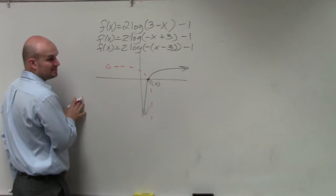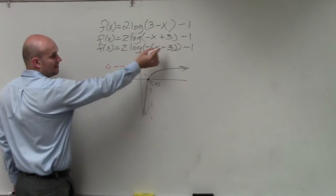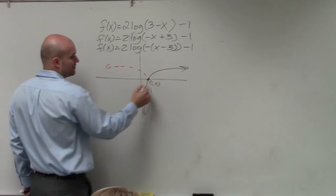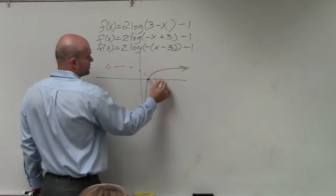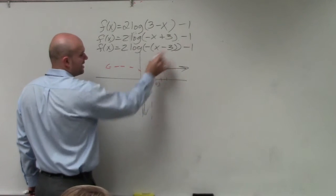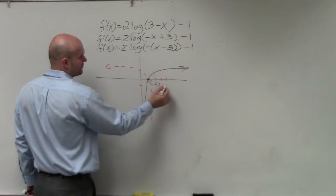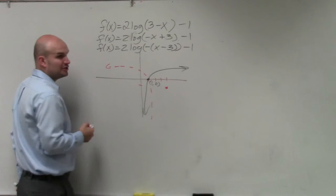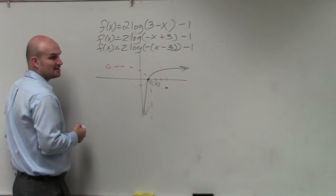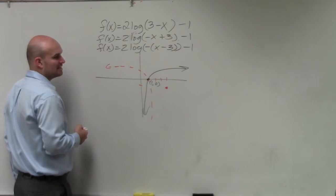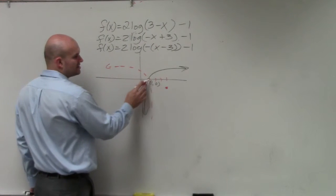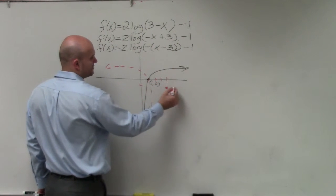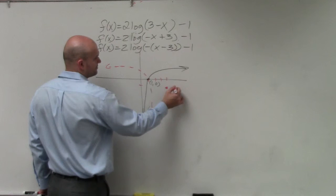So it's being reflected, telling you to shift it to the right 3 — 1, 2, 3 — and then it's going down 1. So my new point on my graph is 4, negative 1.